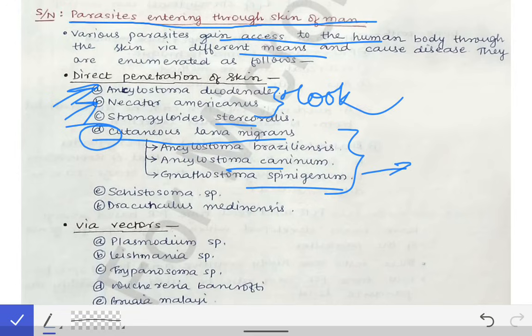Then Schistosoma also gets direct entry through the intact skin. Dracunculus medinensis also enters directly into the body through intact skin. So these are the organisms which get direct entry into the human body through intact skin by direct penetration.